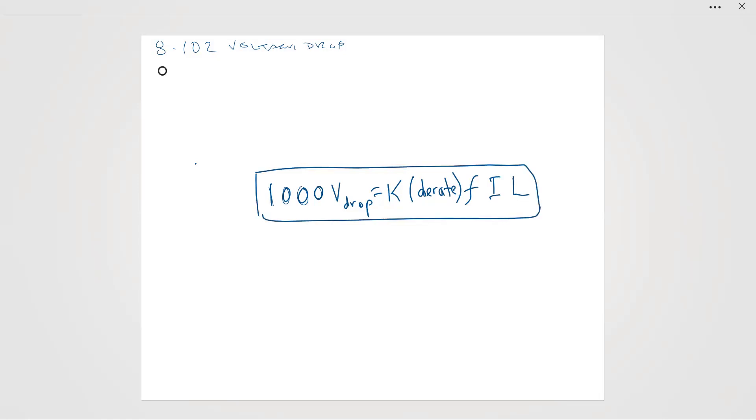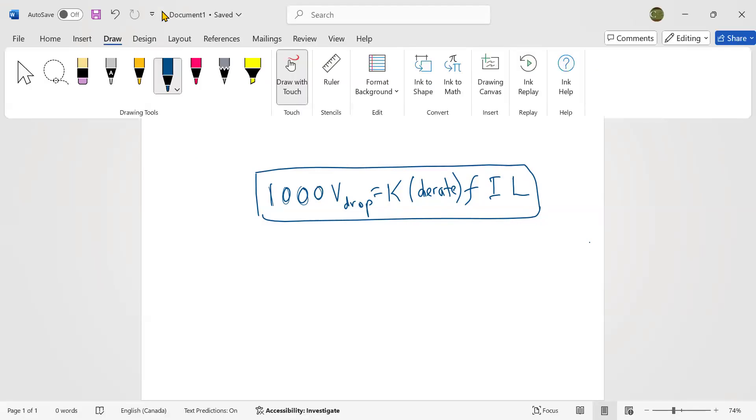And that's the formula that you have to use for 8-102 voltage drop calculations in the Canadian electrical code, or otherwise I call it the D3 calcs. We said that they were scary and awful, but they're not. That's all there is. So when you're approaching your test, you just need to know that.